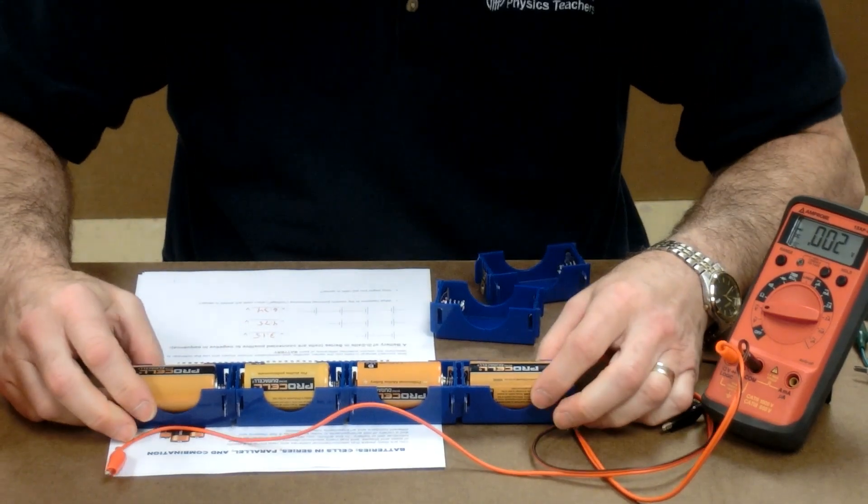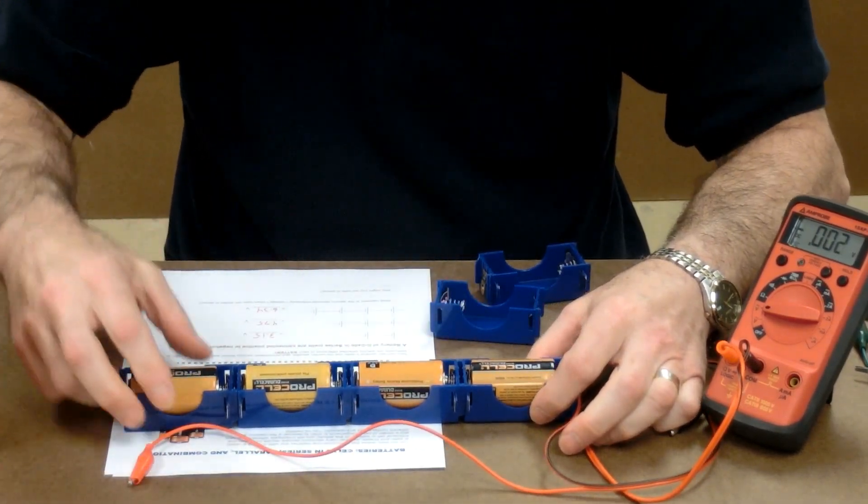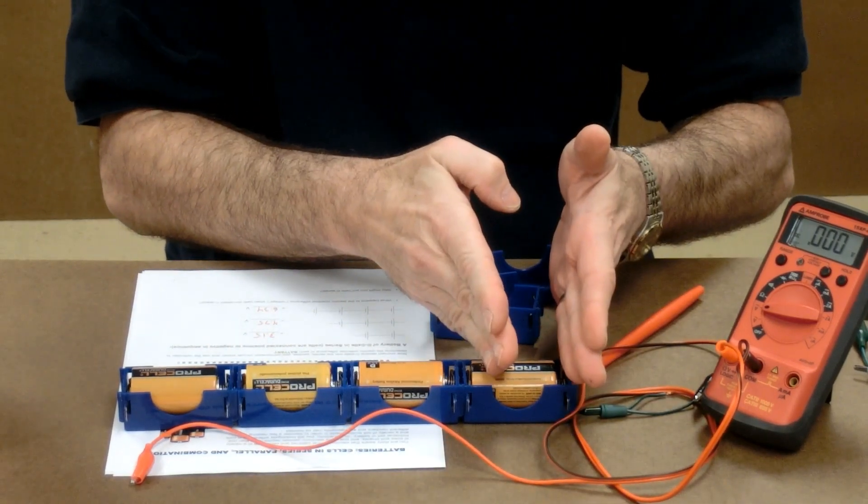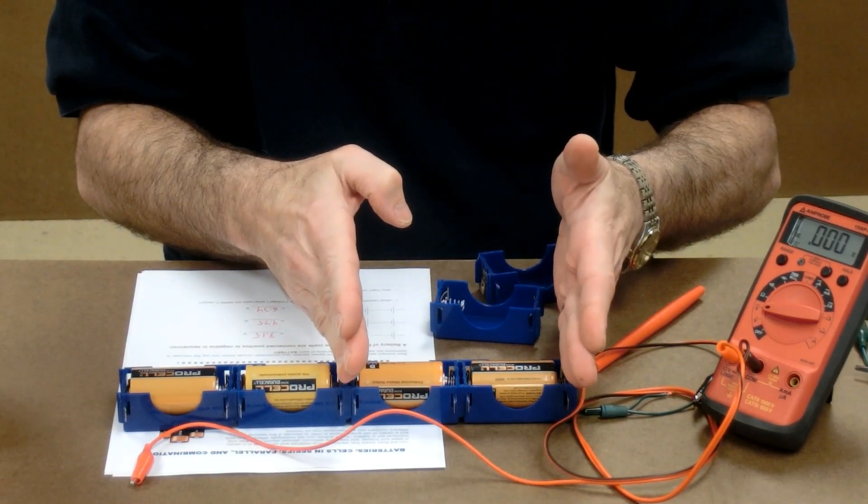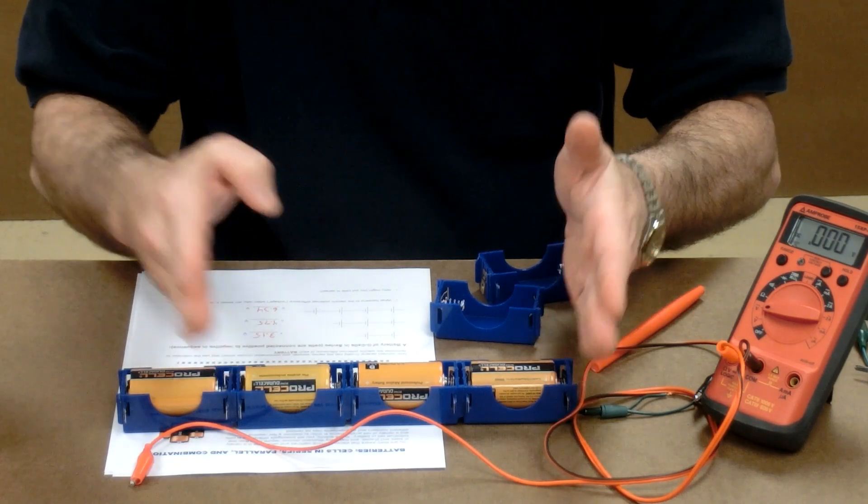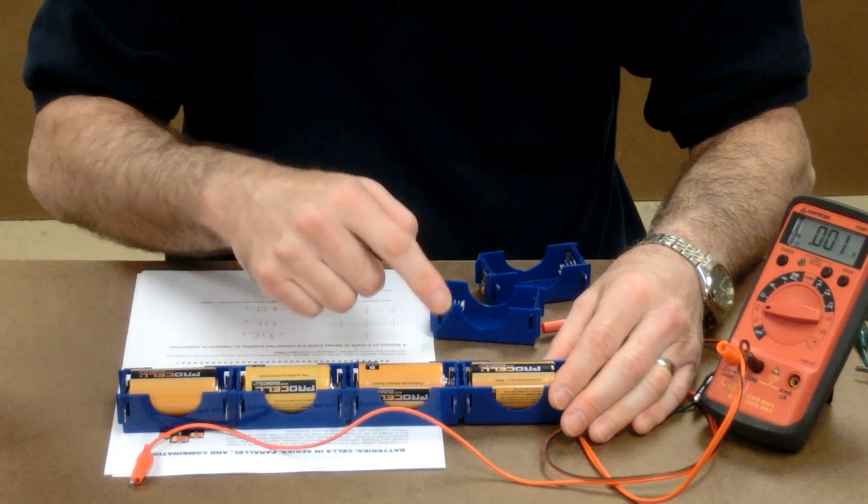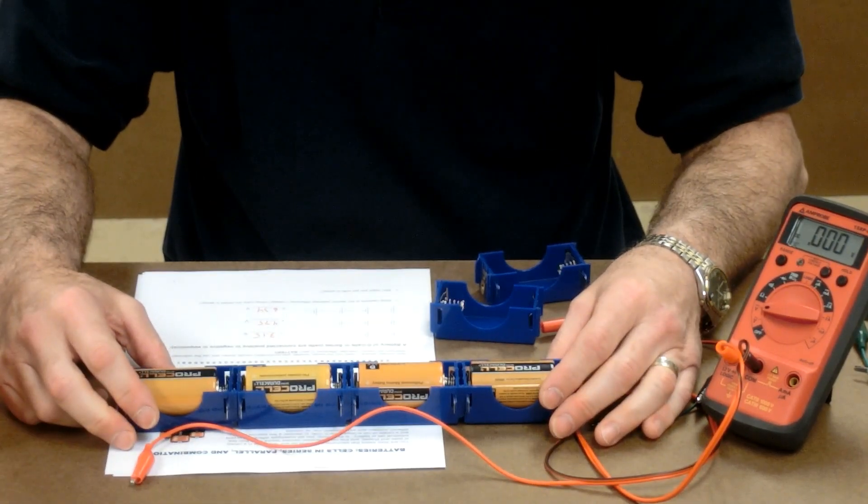So what happens to the voltage when we put cells in series? Well, the voltage adds up. 1.6 for one, 3.2 for two, 4.8 for three, and 6.4 for four when they're approximately 1.6 volts apiece.